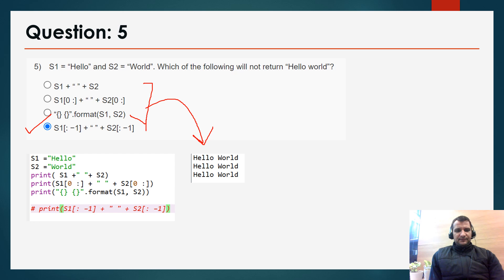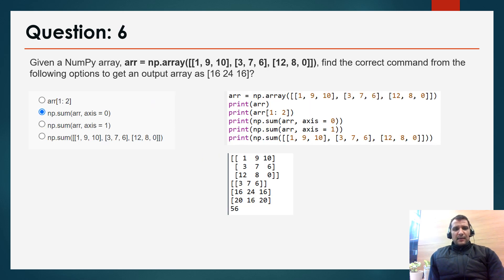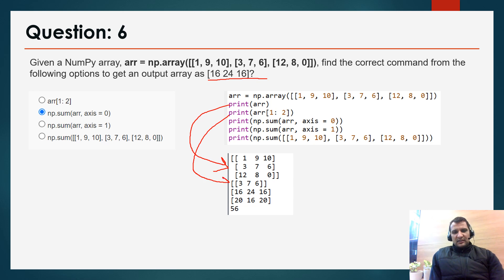Question 6: given a NumPy array, find the correct command to get an output of array [16, 24, 16]. I put all commands into Spyder: first printed the full array, then printed array[1:2], which gave [3, 7, 6]. When I used np.sum(array, axis=0), the correct answer is [16, 24, 16], which is the required result.